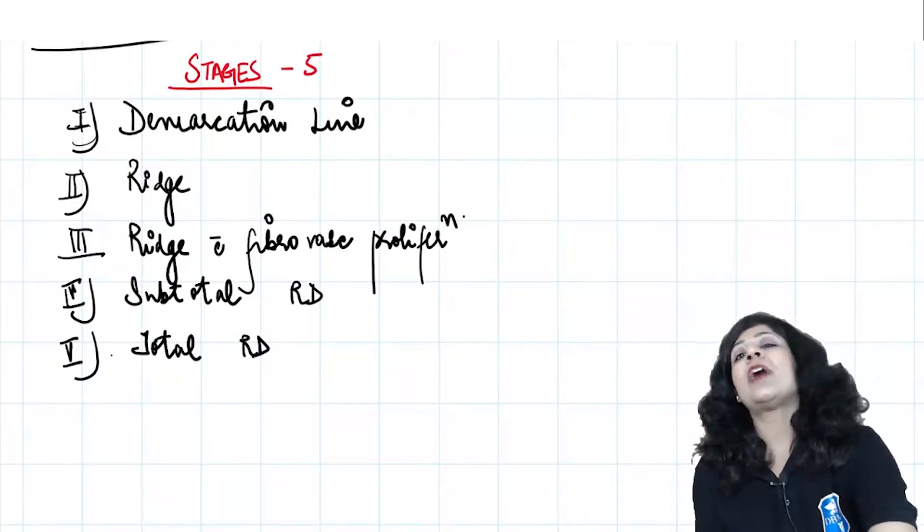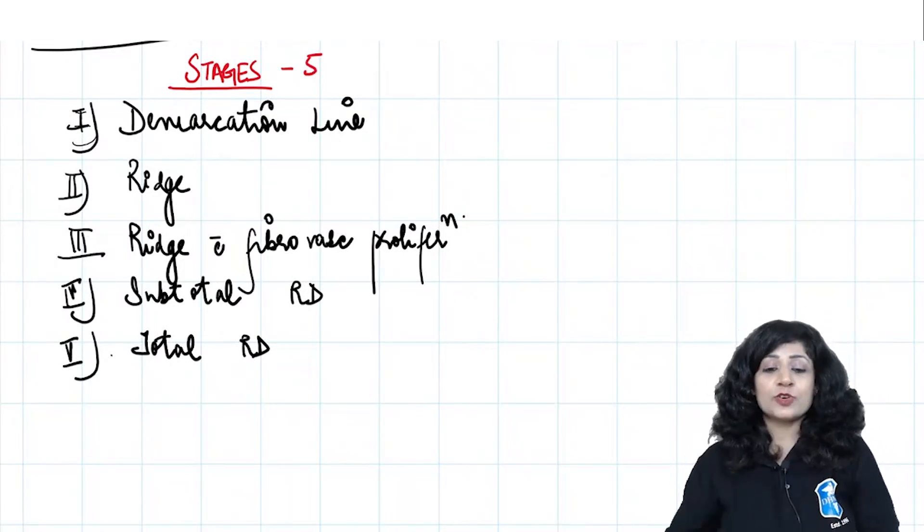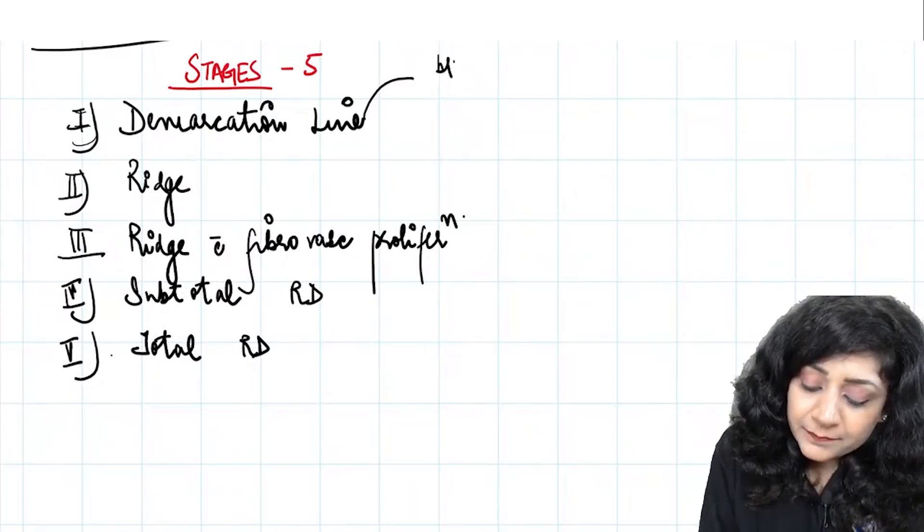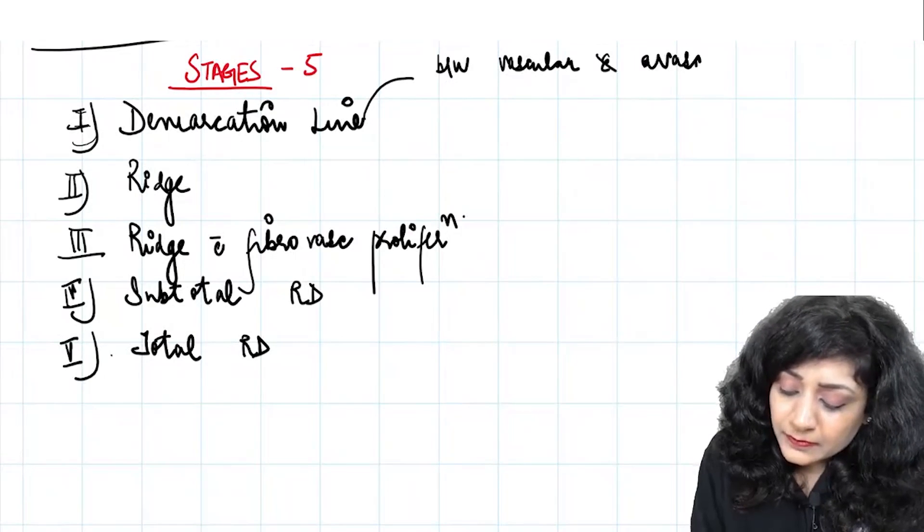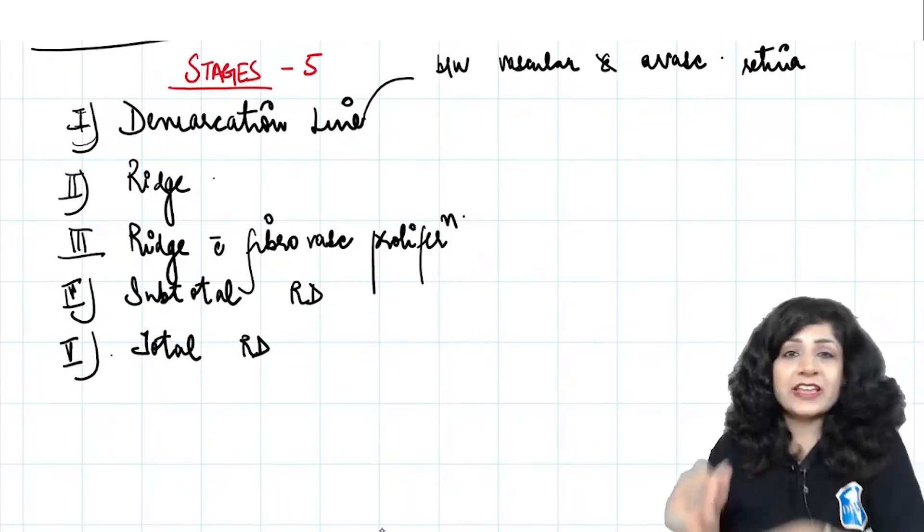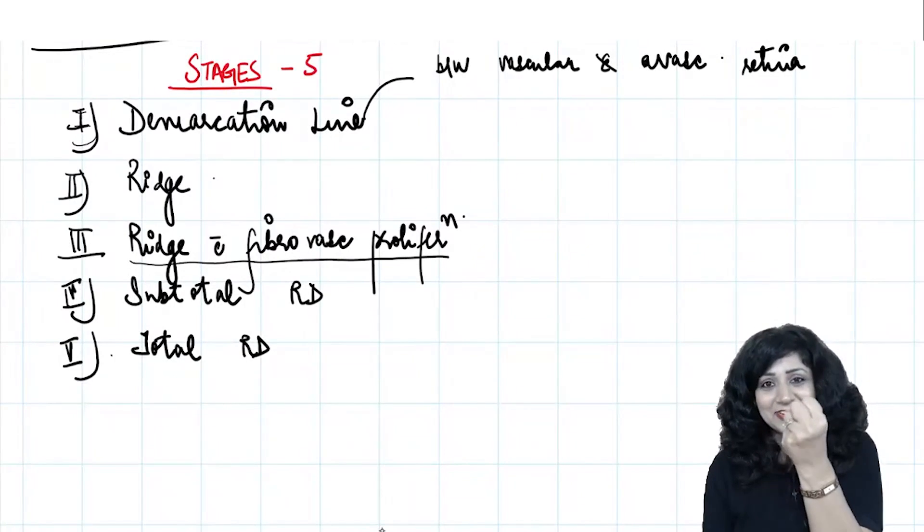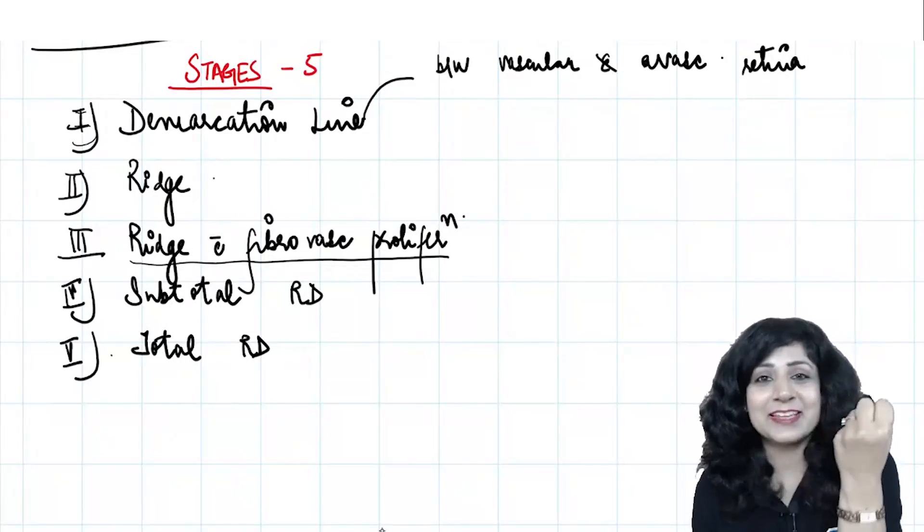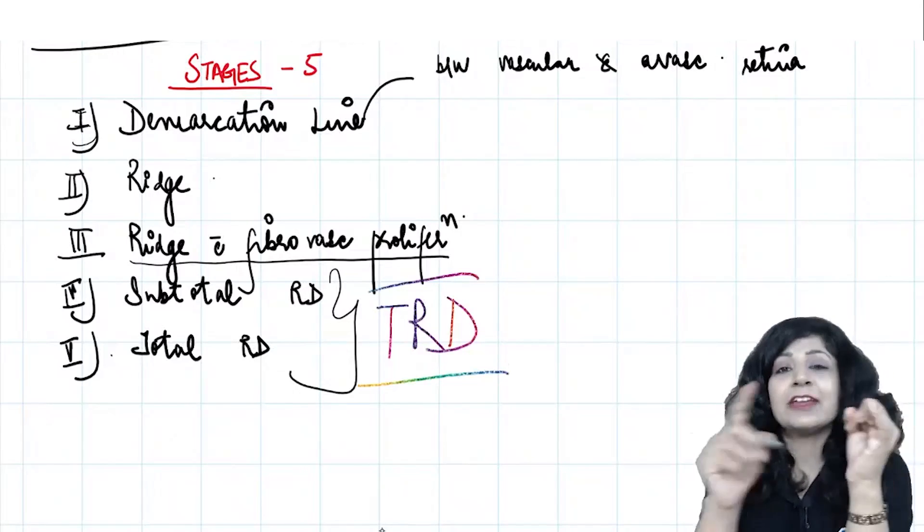Now one question for you. What is the kind of RD that I get here? We have a demarcation line between vascular and avascular retina. Ridge is an elevated line. Then we have ridge with fibrovascular proliferation, and this is leading to retinal detachment. What is the kind of RD? Yes, it is tractional retinal detachment.